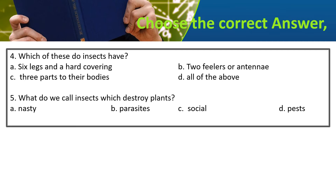What do we call insects which destroy plants? The options are: nasty, parasite, social, or pest. The answer is pest.